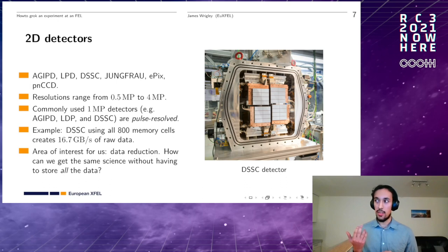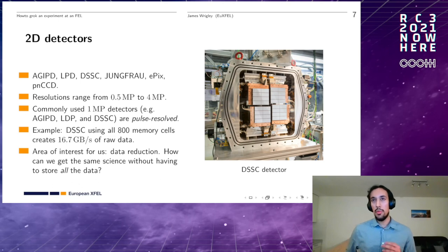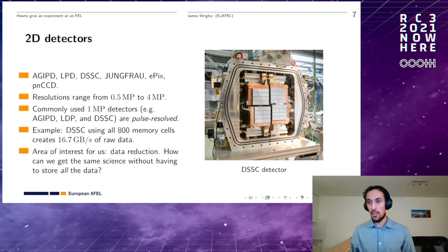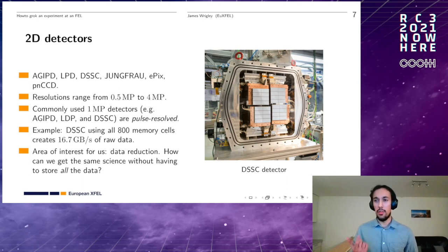That's about two and a half Bitcoin blockchains per minute. Keep in mind this data is just from a single detector. Usually at XFEL there will be multiple experiments running simultaneously across different instruments, so you could have three detectors all producing data at gigabytes or tens of gigabytes per second. A big area of interest for us is therefore data reduction, because this kind of data rate is really difficult to manage.